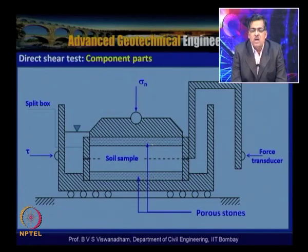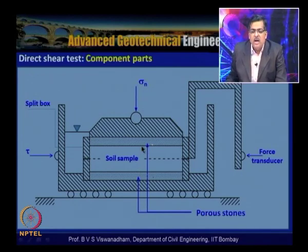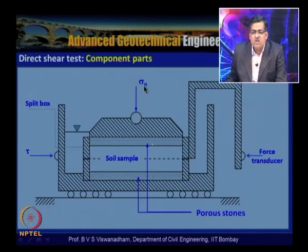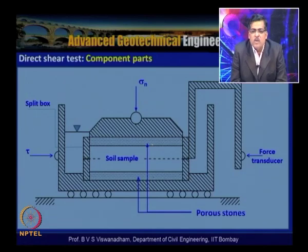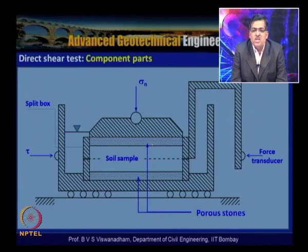Failure is induced along the predetermined failure plane. Porous stones allow drainage. A loading plate is used with a lever arm arrangement to apply normal stresses typically ranging from 25 kPa to 300-400 kPa. Shear force is then applied and the resistance offered by the soil surface is measured.